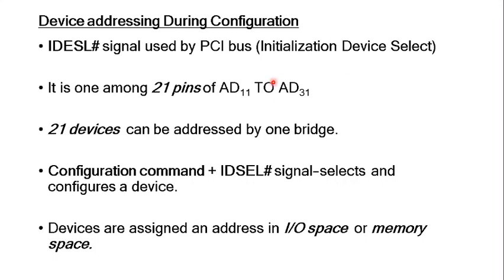The Initialization Device Select signal can appear in various AD (address/data) lines from bits 11 to 31. For instance, for the first device connected to the PCI bridge, the IDSEL signal appears in AD line 11. For the second device connected, the IDSEL signal will appear in AD 12. The PCI bus locally identifies devices this way — for example, the device with IDSEL in AD 12 line, or the device with IDSEL in AD 11 line. This electrical identification happens during the configuration phase, when the system is initially starting up or a new device is installed.